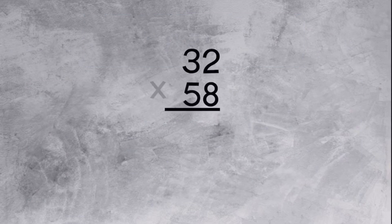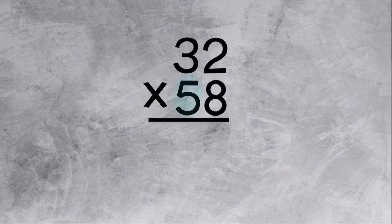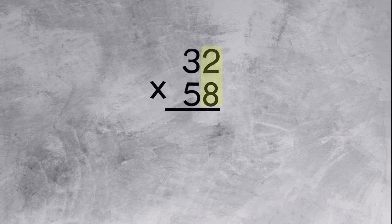Let's multiply 32 times 58. We are going to start by multiplying the 8 by the 2 and the 8 by the 3. Then we will repeat the process with the 5 and the 2 and the 5 and the 3. Let's go ahead and begin.